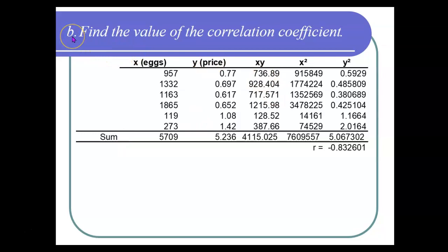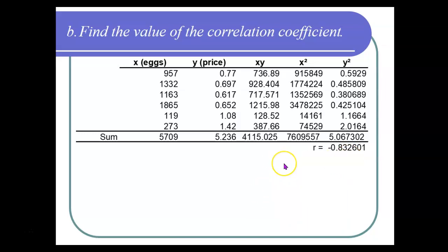Step B is to find the value of the correlation coefficient. You can use the formula, plugging in 5709 for the sum of the x's and 5.236 for the sum of the y's, or ask Excel using the CORREL function, or use a graphing calculator. It should come out to be approximately negative 0.833.